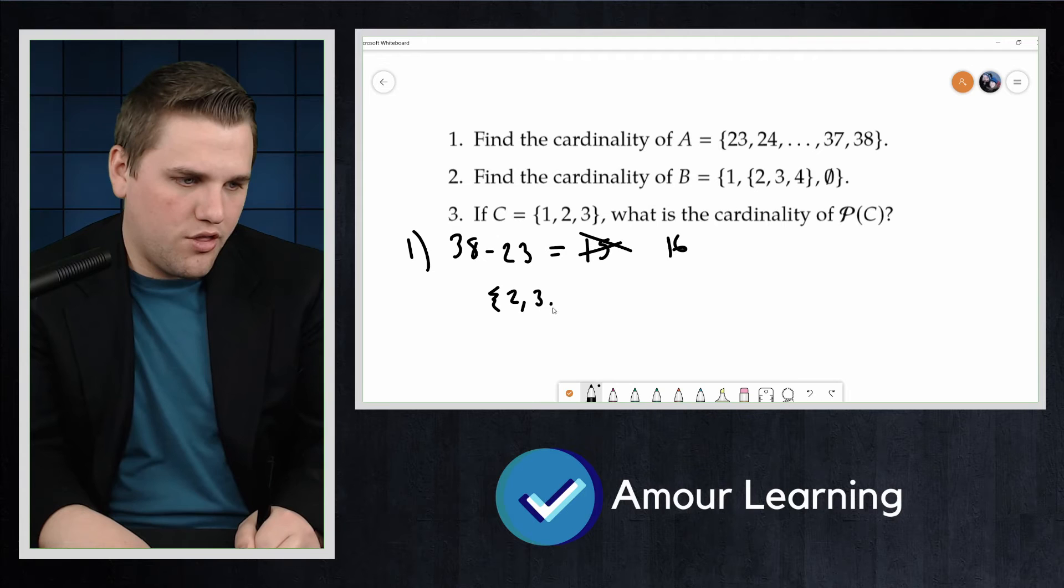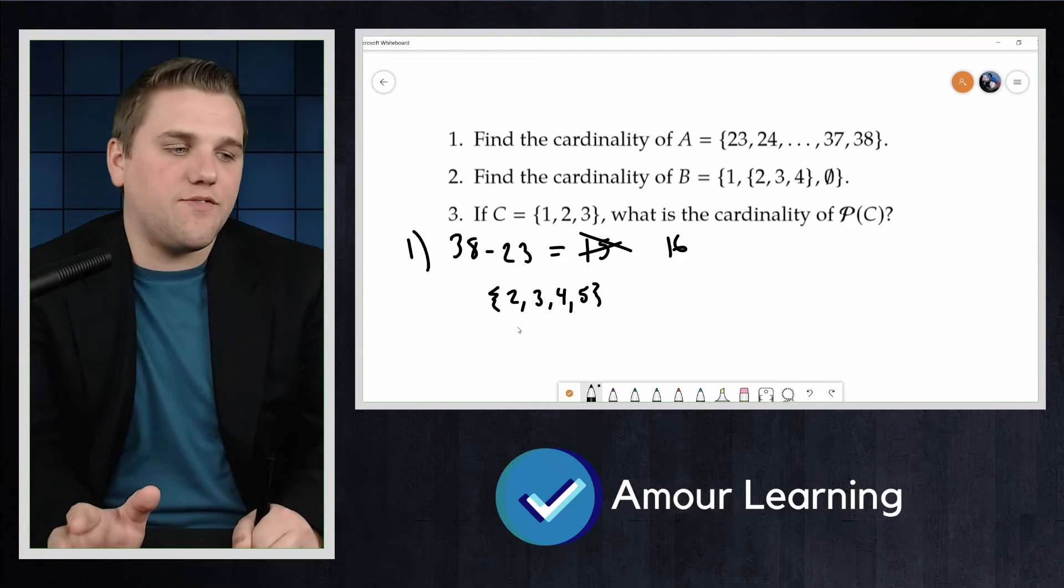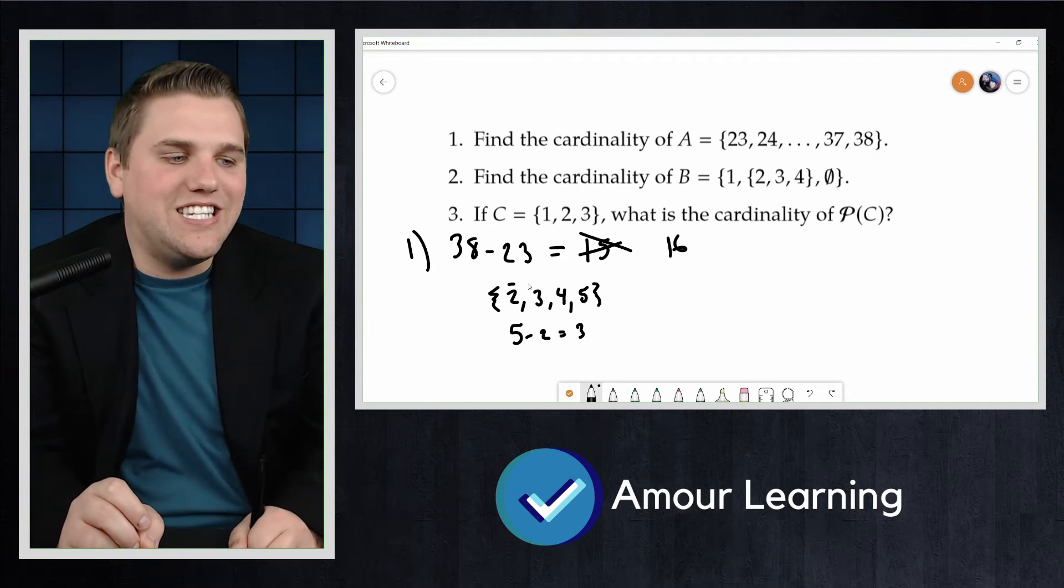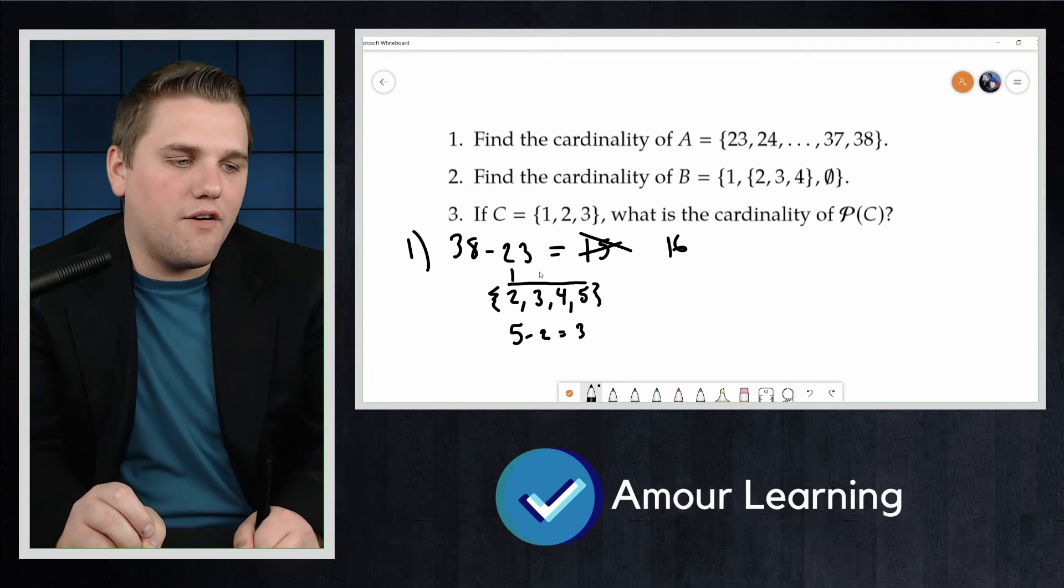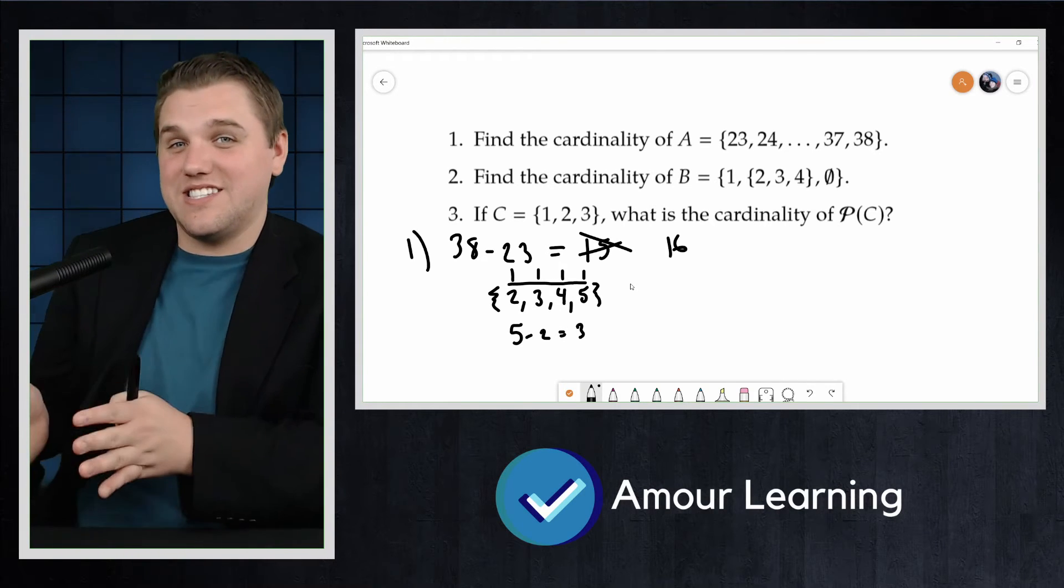When you do differences like this, like {2, 3, 4, 5}, if you do 5 minus 2, you get 3. But that's the distance. That's not the number of ticks here. And this is a difference between measuring distances and ticks.